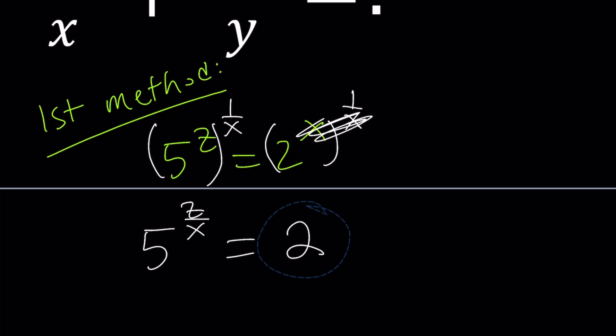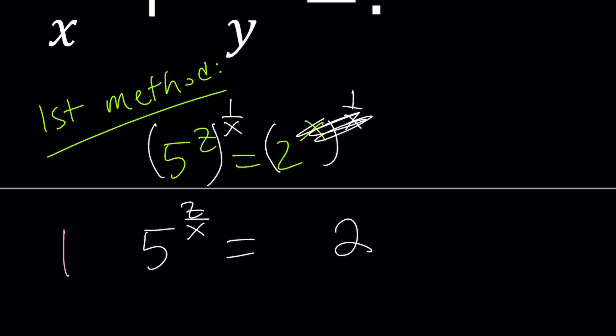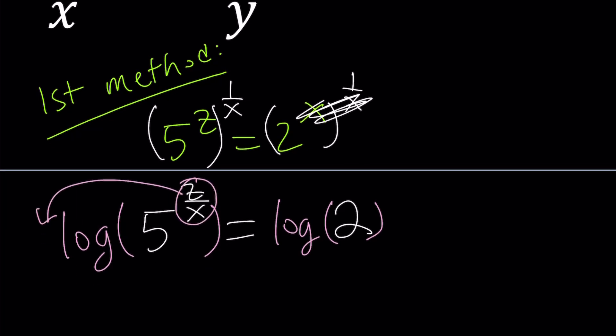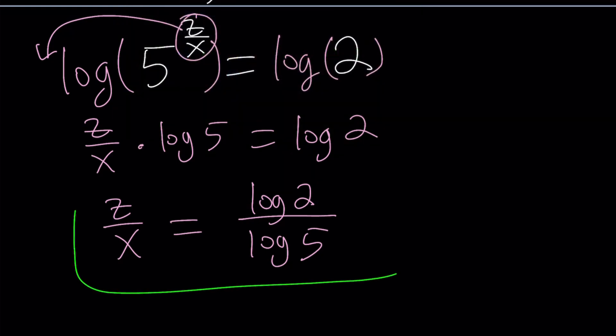Let's go ahead and log both sides. I'm going to be using base 10 like I said earlier. Log this and log that. Bring the z/x to the front. z/x times log 5 = log 2. And from here by way of division you get z/x = log 2/log 5.